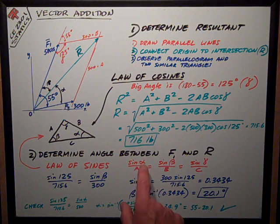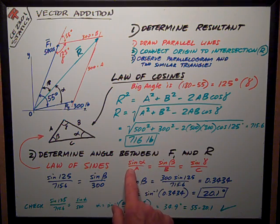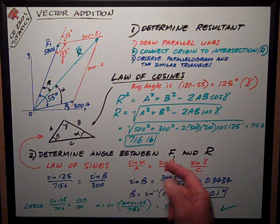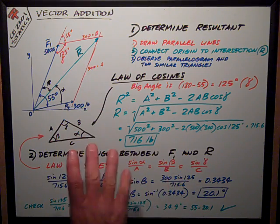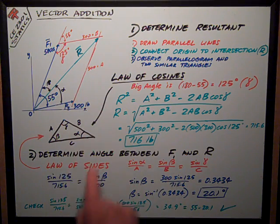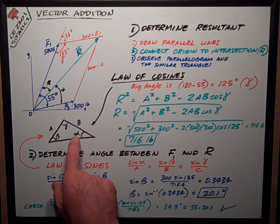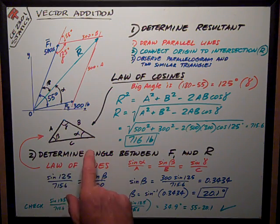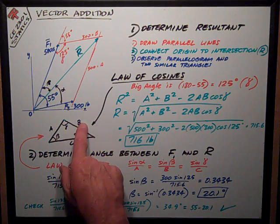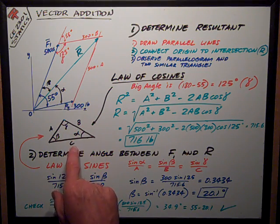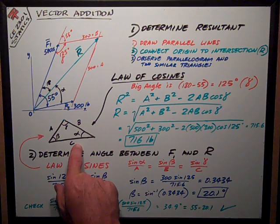The law of sines states that the sine of the opposite angle from the side divided by the side's length is equal throughout the triangle. Sine of alpha divided by length A equals sine of beta divided by length B equals sine of gamma divided by length C.